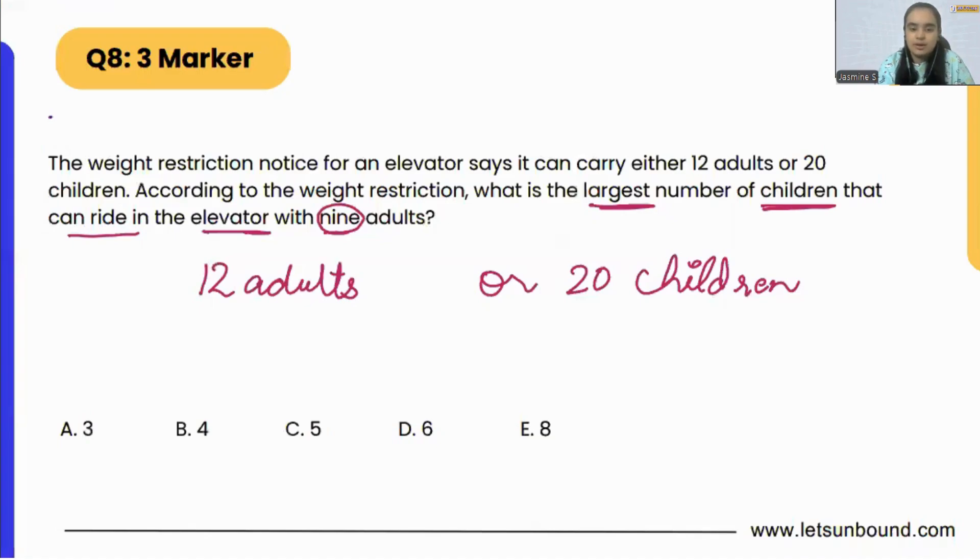If we form the ratio from here, 12 adults to 20 children, right? So if we simplify this, if I divide this by four and this also by four, I will get three adults. For every three adults, there will be five children.